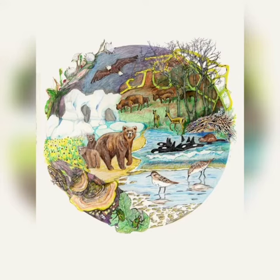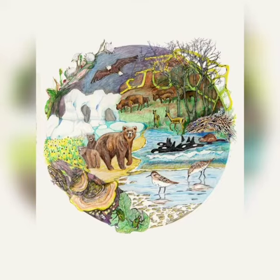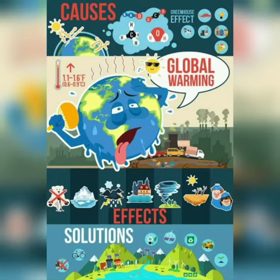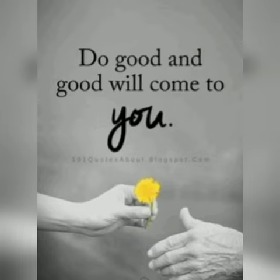Each living being needs a specific environment to survive. This environment is called a habitat. The community of living organisms along with non-living components in the same environment — such as air, water, soil, and minerals — interacting as a system is called an ecosystem.